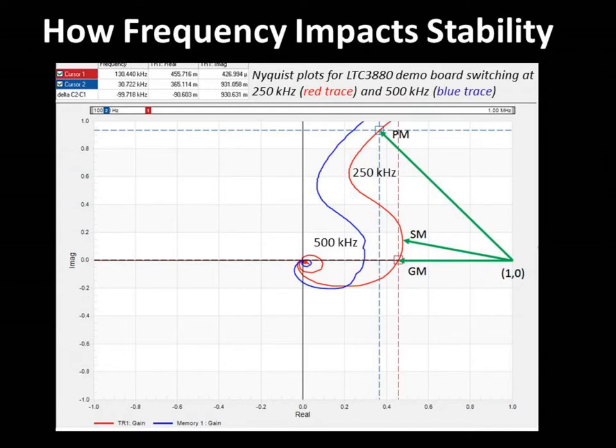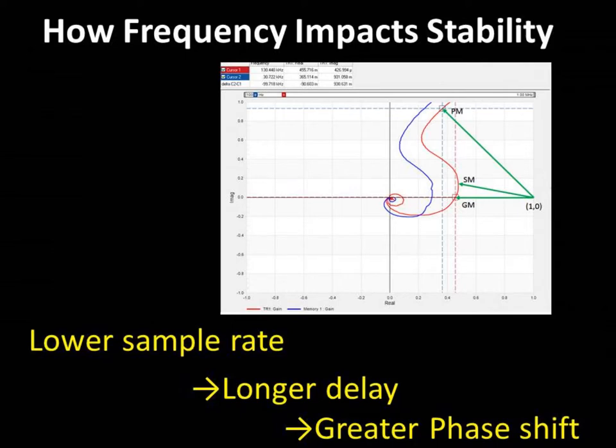Looking at these same two Bode plots in a Nyquist display, we can see the phase margin, gain margin, and stability margin. And most importantly, this plot also shows how the curve moves closer to the singular unstable point at 1,0 as the switching frequency is reduced. This is almost entirely due to the zero-order hold, and it's a very common issue for DSP-based digital power supplies, since all digital loops are sampled. The lower the sample rate, or switching frequency, the longer the delay, and therefore the greater the phase shift.